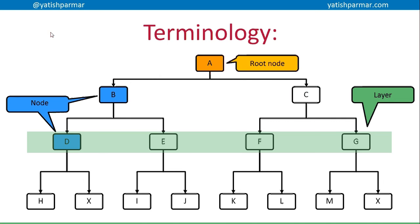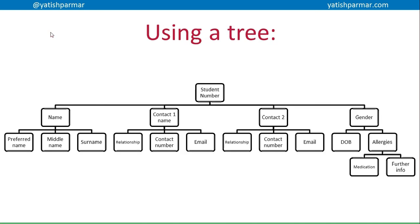The Xs represent no pointers. This is an example of using a tree — for example, your student number could lead to a node which has your name, leading to preferred name, middle name, surname. You might have a contact, their name, their relationship, contact number, email. So by traversing the tree — and the key word here is traverse — you can basically retrieve all of the related data for a particular item. Another use for a tree is to store a list of data in order, and then it's quite easy to search.